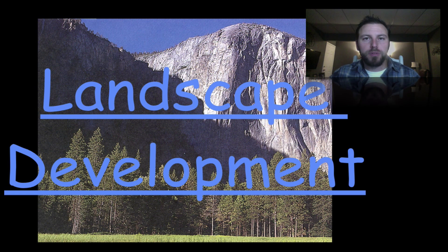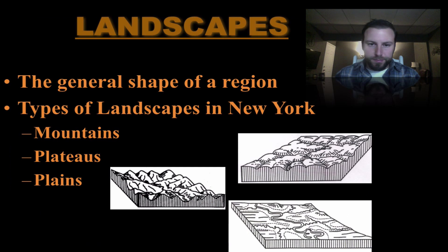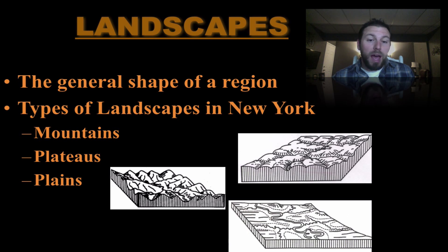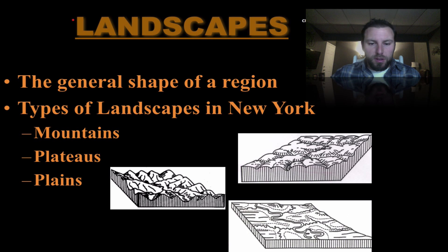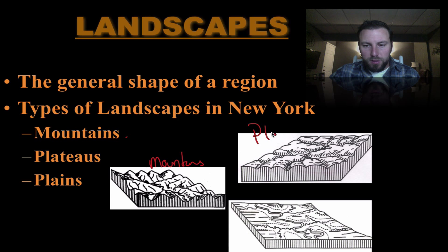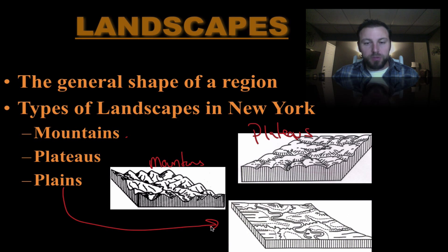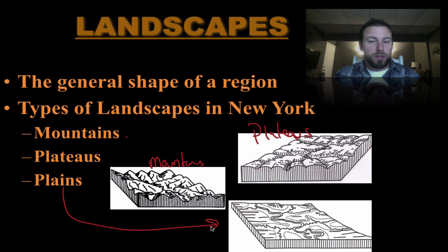Hello ladies and gentlemen, welcome back to another screencast by earth science teacher Mr. Stano. Today we're going to move on to landscape development. There are a few general types of landscapes, and we have these types of landscapes within New York: mountains, plateaus, and plains. From the three representative diagrams, those are the three general types of landscapes, and we have all three within New York State.